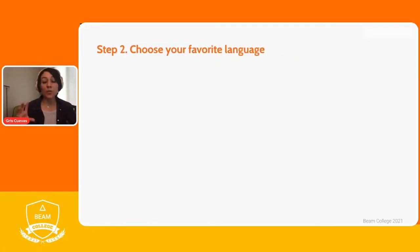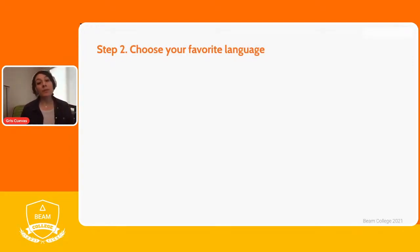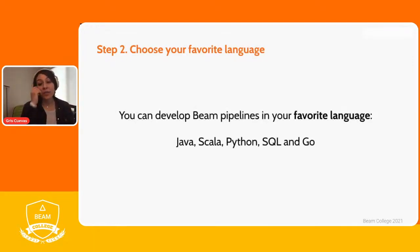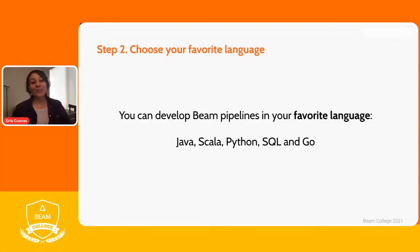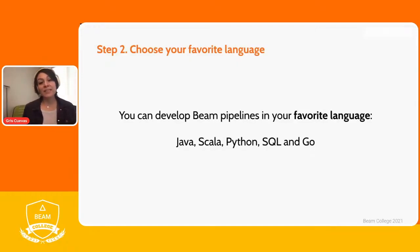The second step when building data pipelines with Apache Beam is to choose your language. Apache Beam is a multi-language programming model that lets you write pipelines in your favorite language. Currently supported languages include Java, Scala, Python, SQL, and Go. Companies can also feel empowered to build their own SDKs, connectors, and transformations to extend the Apache Beam ecosystem.